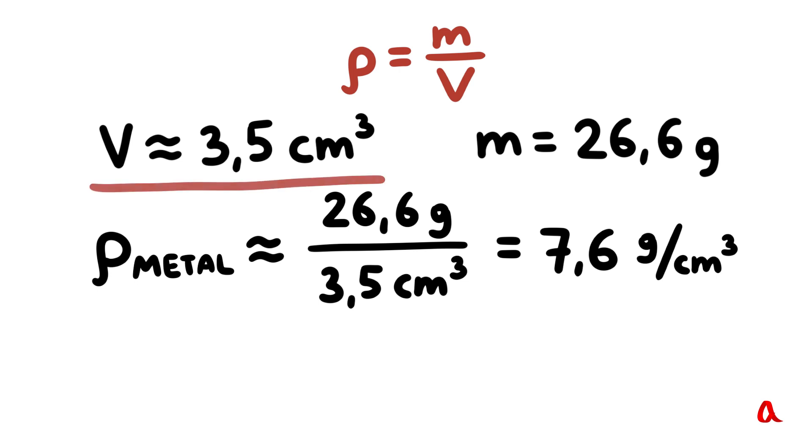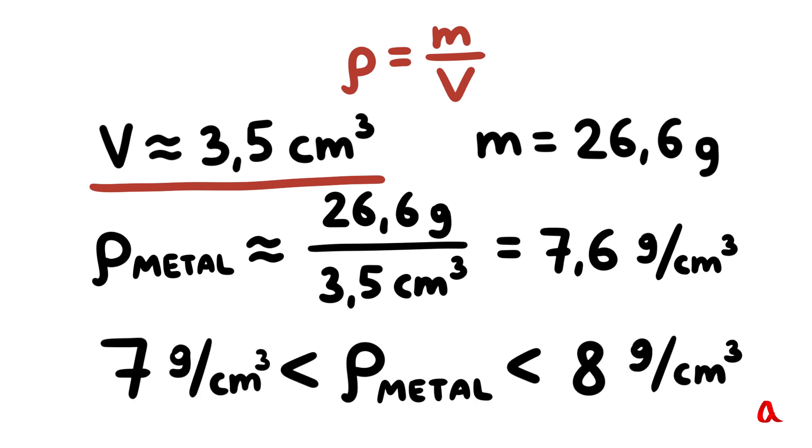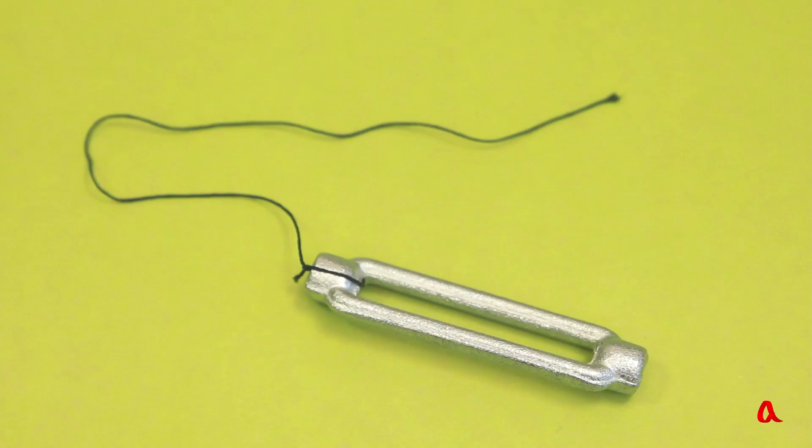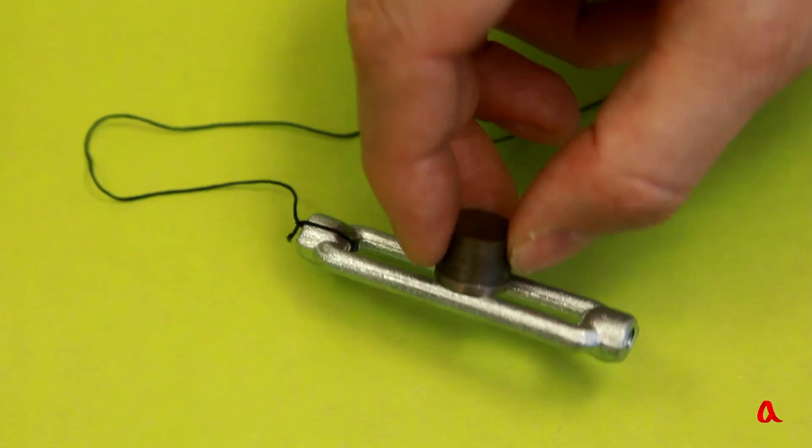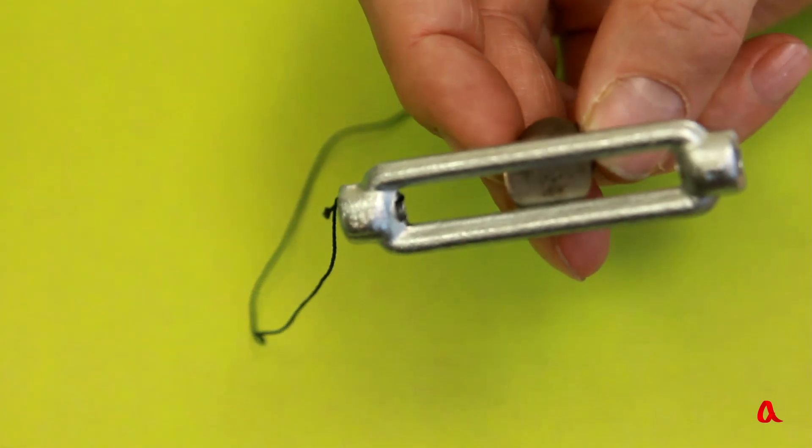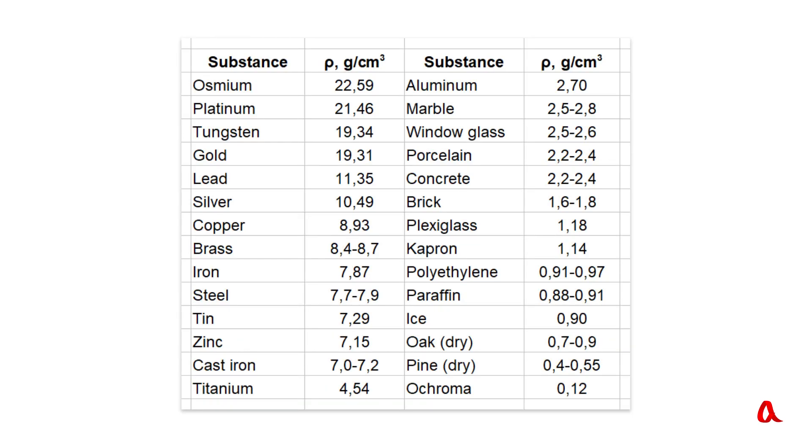The measuring process was not too accurate, so we can only state that this metal's density is more than 7 but less than 8 grams per cubic centimeter. It is attracted by a magnet, therefore it should be steel. Let's look up the density of steel in a chart. It is 7.8 grams per cubic centimeter.